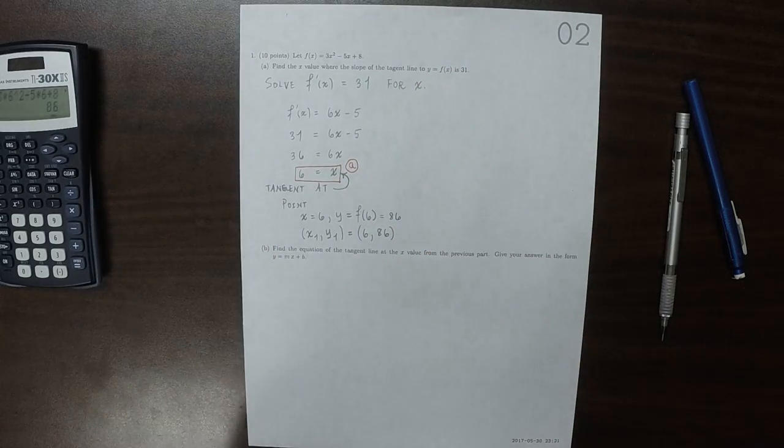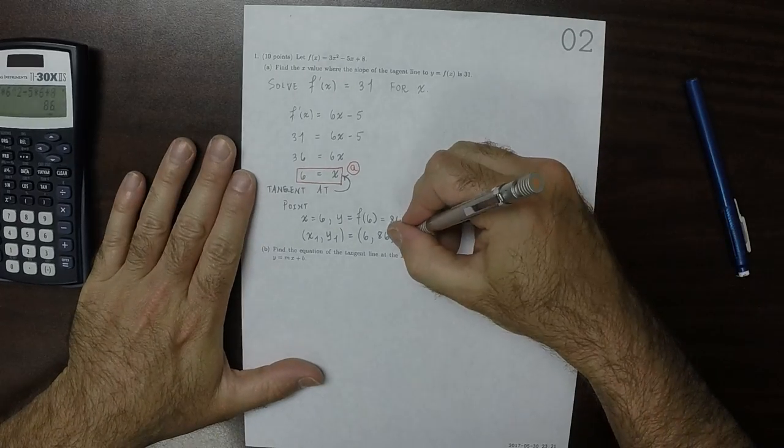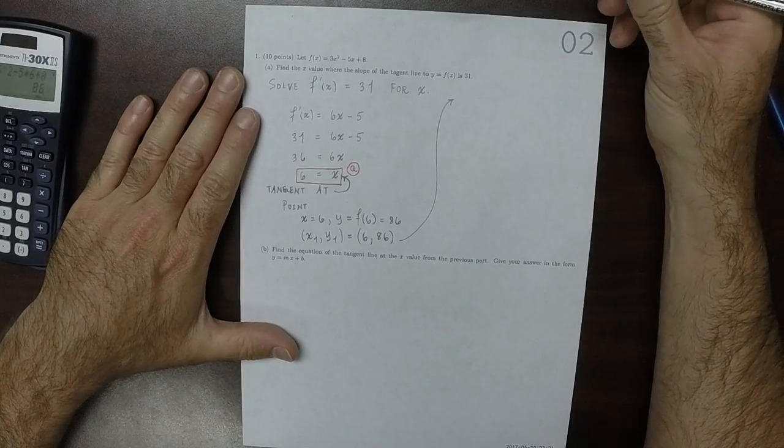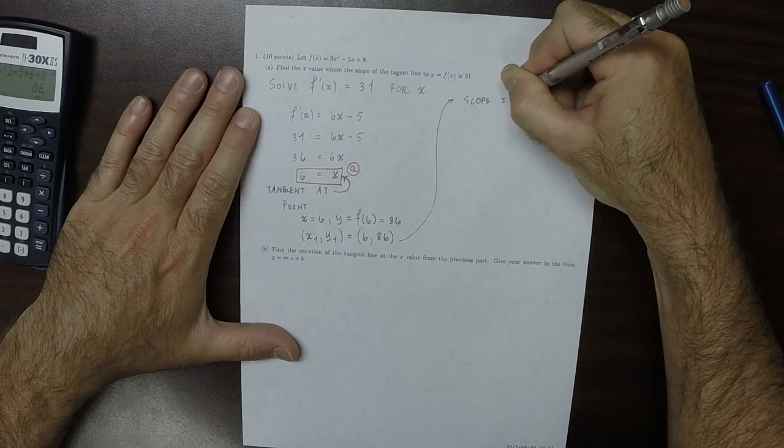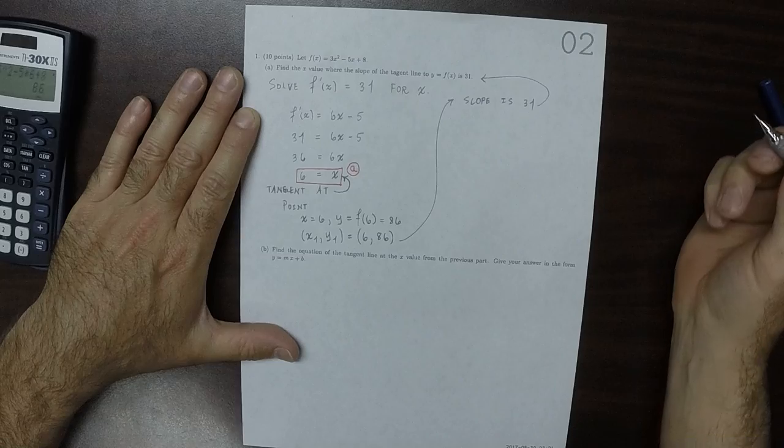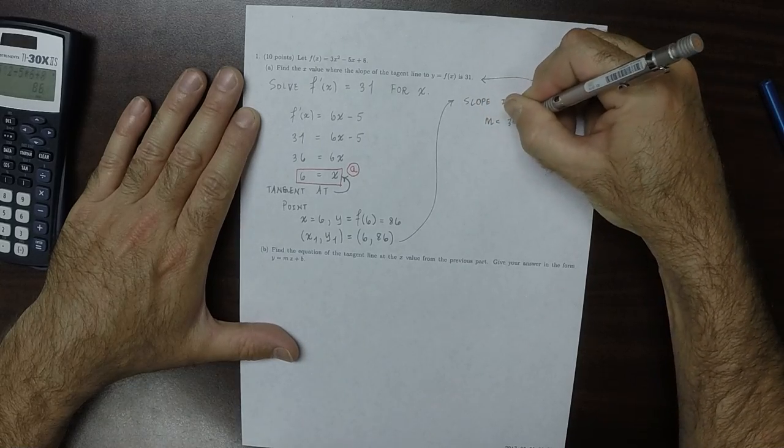And then now I'm solving part b. So we know that the slope is 31. That was the whole point of solving that. So m is 31.